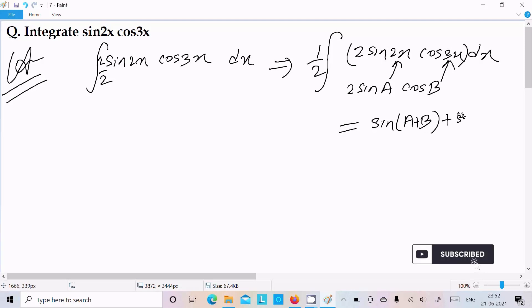Okay, so we can write here 1 by 2, sin(a plus b), that means sin(2x plus 3x), and plus sin(a minus b), 2x minus 3x, dx.